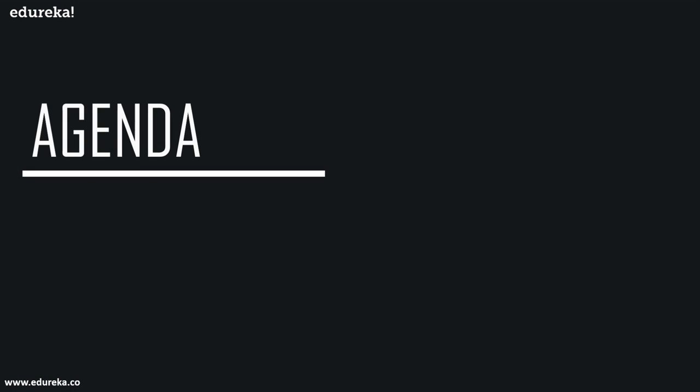The topics for today's session: we'll start by understanding what robotic process automation is, then cover the top tools in this field. After that, we'll jump onto the main topic — the different kinds of projects. We'll discuss the top 10 RPA use cases, and I'll show you how to automate five of them using UI Path and Automation Anywhere.